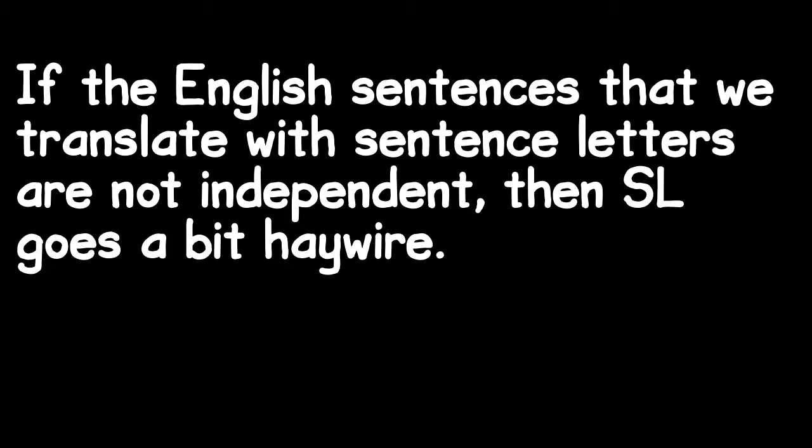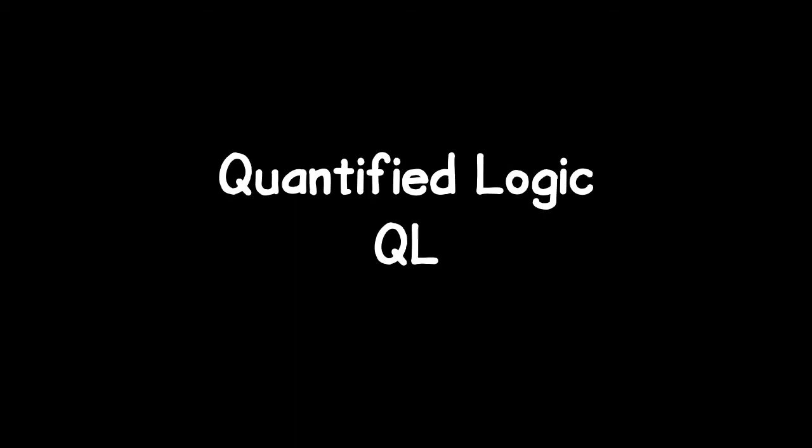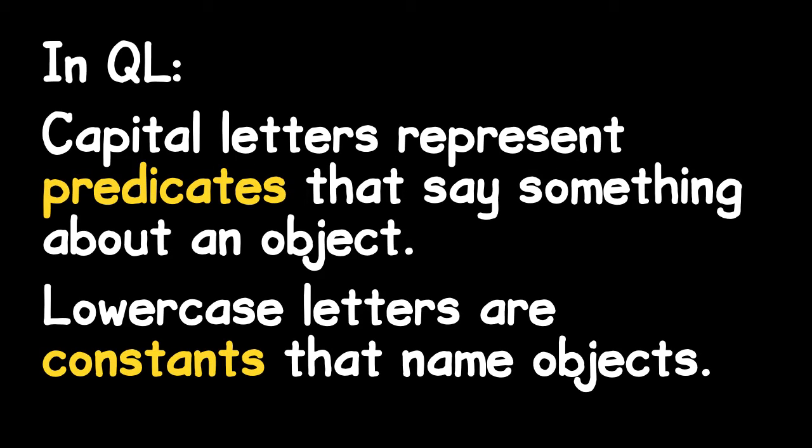So we'll develop a new logical language which represents more of the structure of English sentences. We'll call the logical language quantified logic, QL for short. In QL, capital letters represent predicates that say something about an object. Lowercase letters are constants that name particular objects.